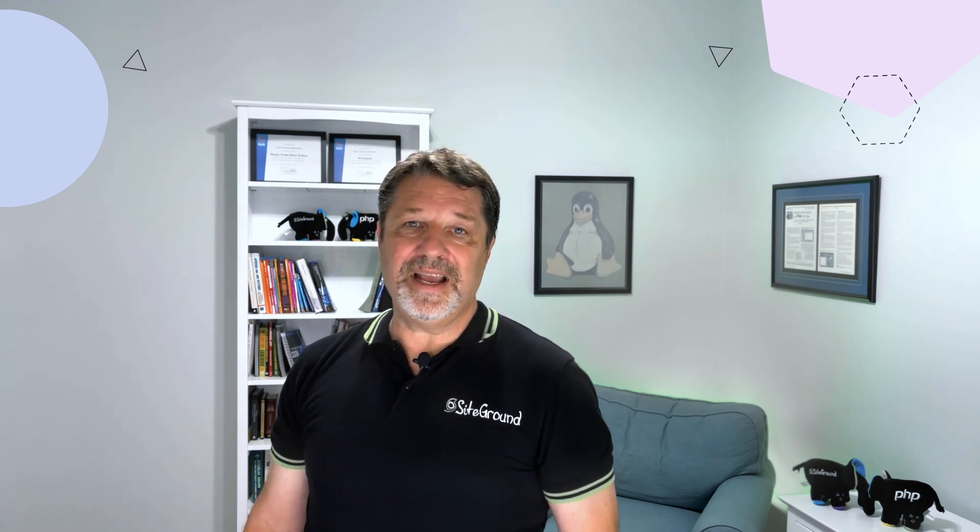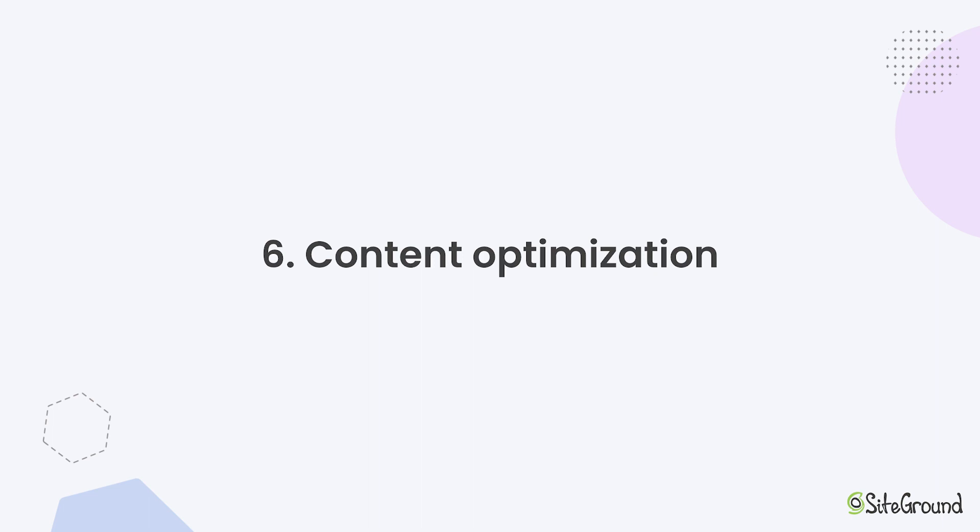So far we've talked about how you can make things run faster. There's another technique we can use to get your website to your users faster — that technique is to make things smaller. We call this content optimization. Let's take a look at three different techniques for making things smaller.